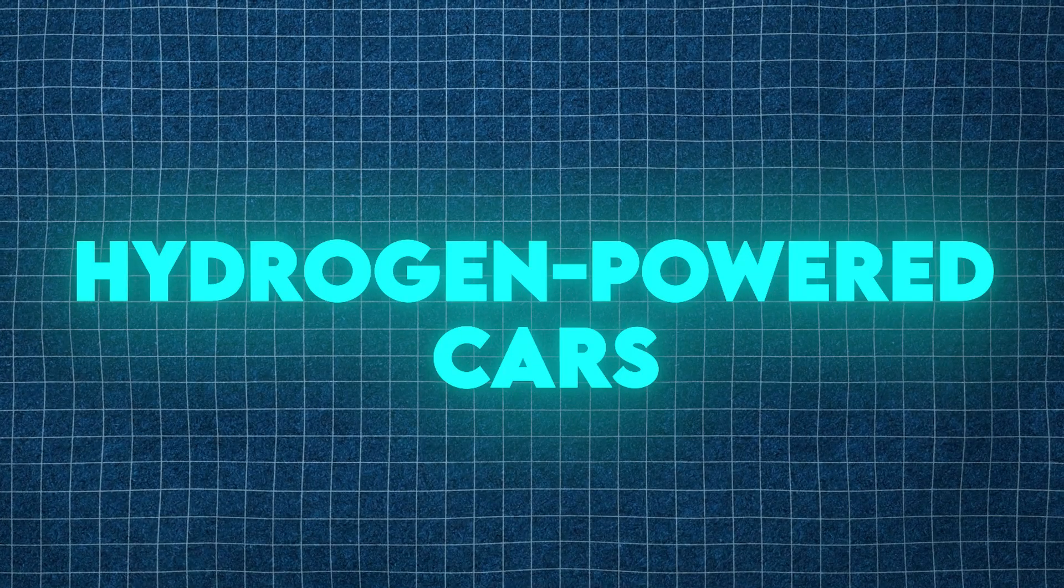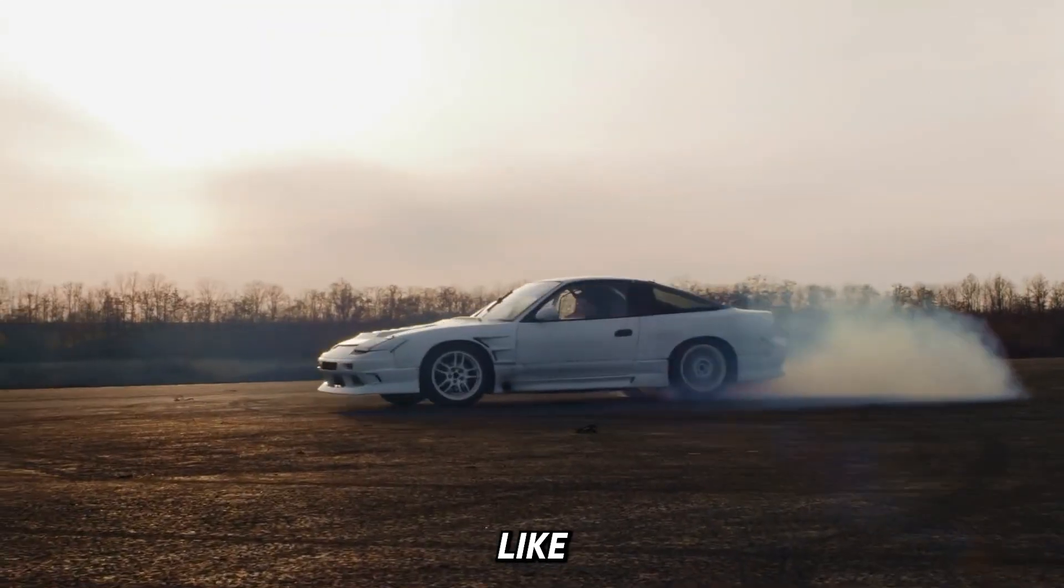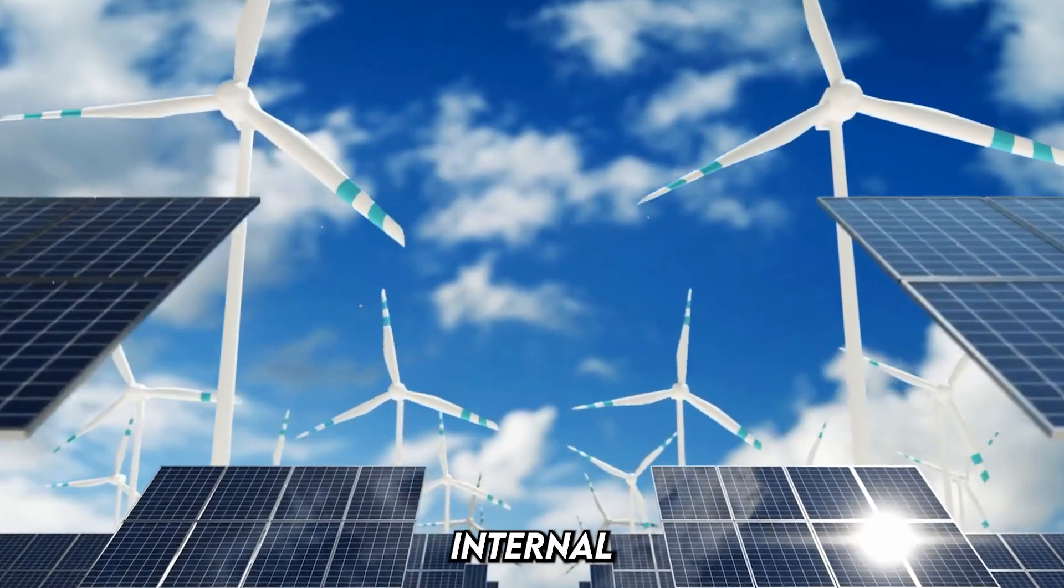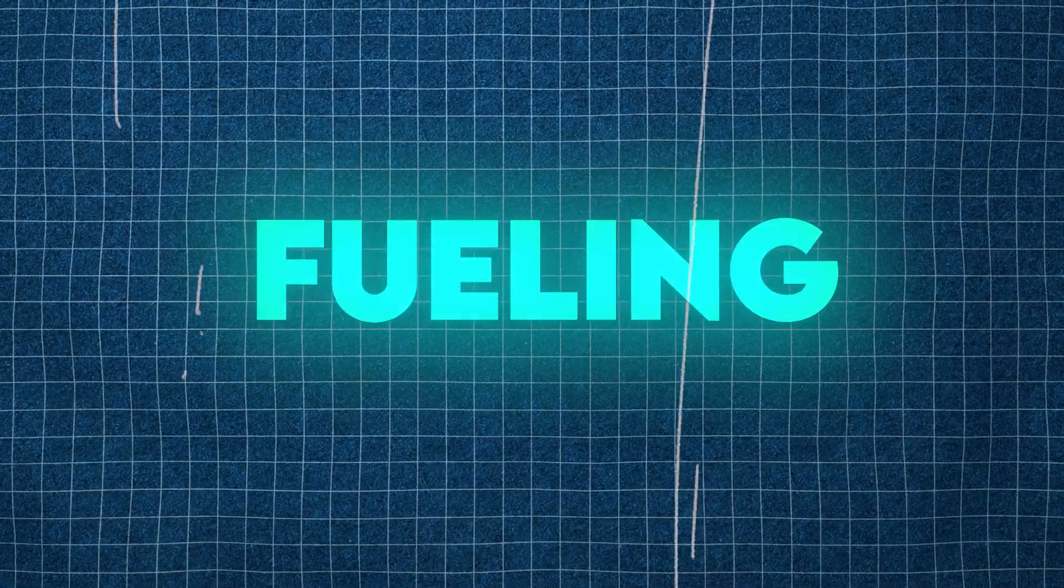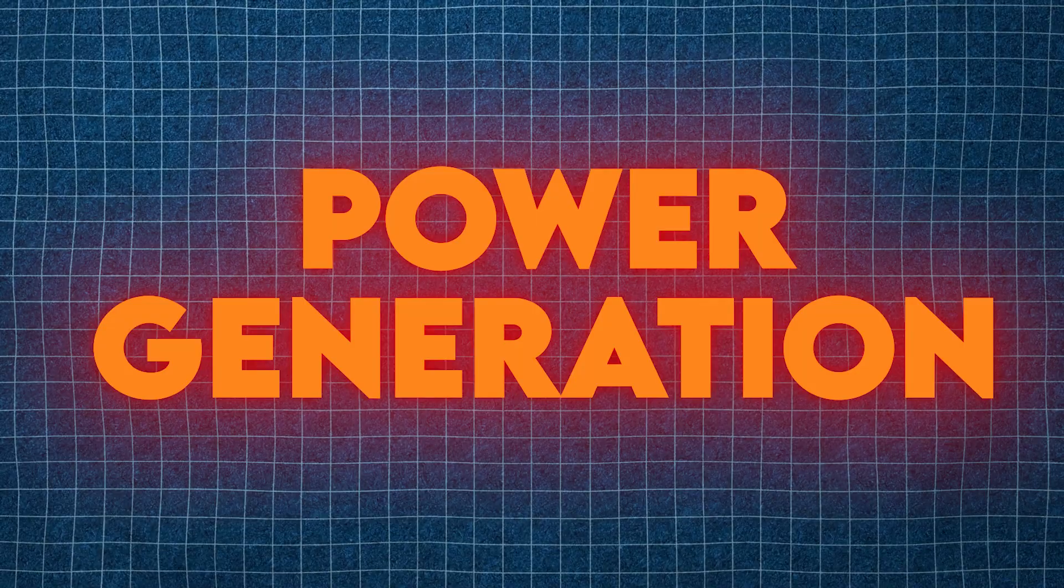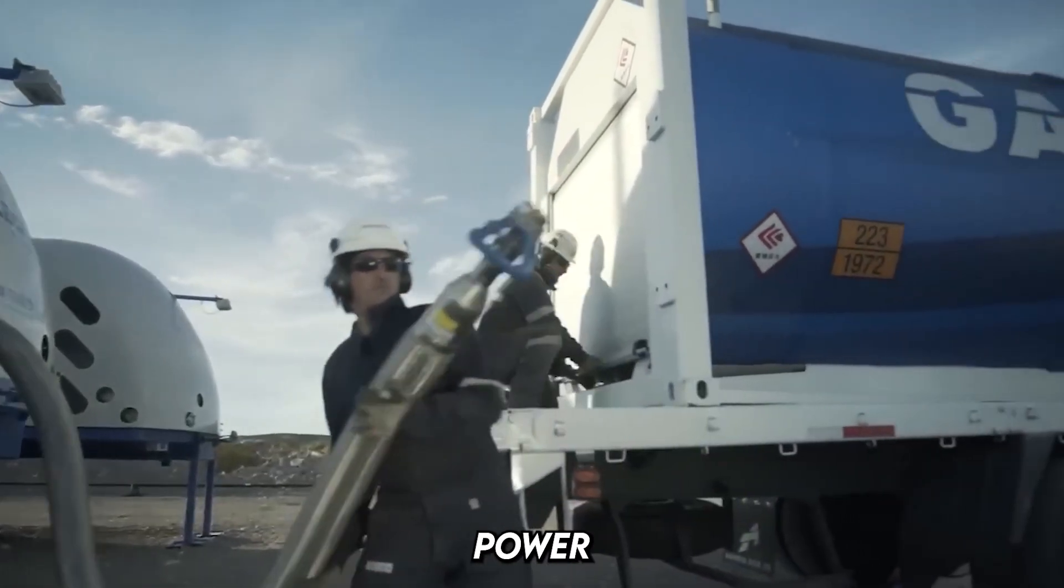Hydrogen-powered cars: The mechanics and benefits. Hydrogen cars like the Toyota Mirai and Hyundai Nexo run on fuel cells instead of internal combustion engines. Here's how they work: Fueling - hydrogen gas is stored in high-pressure tanks. Power generation - the fuel cell converts hydrogen into electricity to power the car's motor.